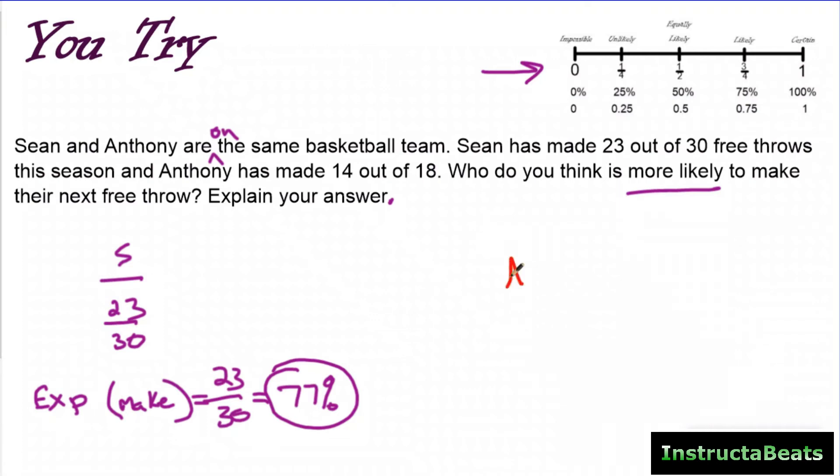And then you have Anthony, and Anthony hasn't shot as many, right? So he has a smaller sample size. He only has 18, but he's made 14 out of 18. So his experimental probability of making it is going to be 14 18ths. And again, I'm going to have to round up because I round up to the nearest whole for this one. If I round this one up just to make it a little bit easier, he has a 78% chance of making his next free throw. Again, we use the experimental probability to make that prediction. So your answer would be Anthony, because Anthony was further towards 100%. So Anthony is more likely to make his next free throw.